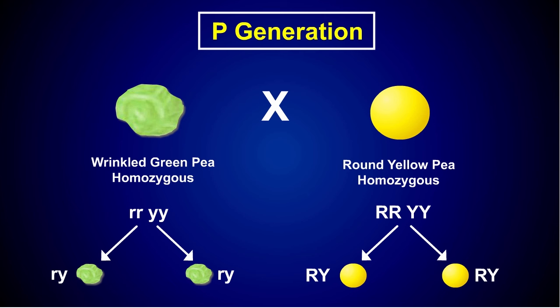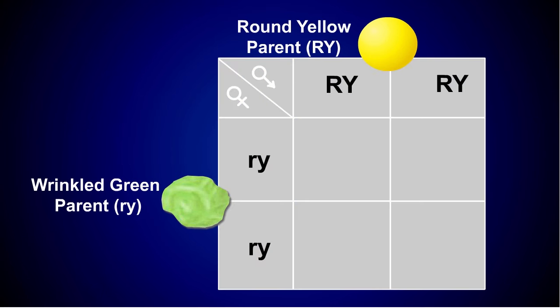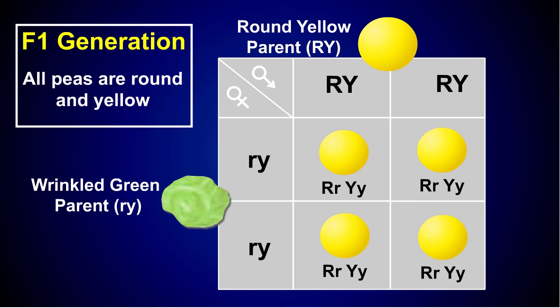A diagram of the cross between two members of the F1 generation, called a Punnett square, is shown here. When the gametes from these pea plants are combined, all of the offspring in the F1 generation are round and yellow. This is because the traits for round and yellow are dominant over the traits for green and wrinkled.